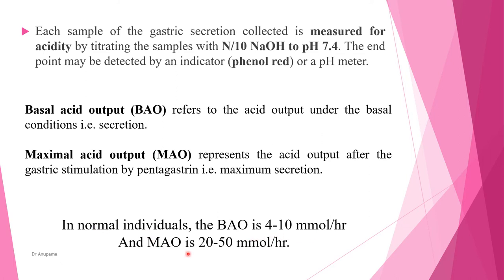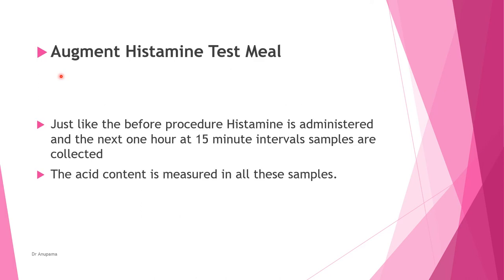The Augmented Histamine Test follows a similar procedure, except histamine is administered instead of pentagastrin. Gastric juice samples are collected every 15 minutes for one hour, and the acid content is measured in all samples.